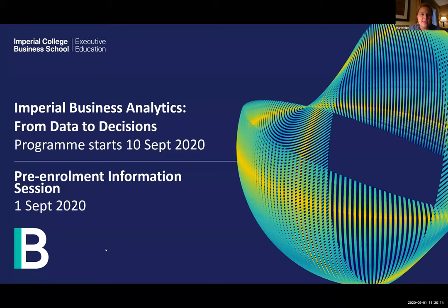We are just broadcasting live here, getting everything up and running for today's session. If you're already with us, welcome — it's good to have you here. You've reached the Imperial Business Analytics from Data to Decisions program pre-enrollment information session. The course starts on September 10th, and today is the first of September.